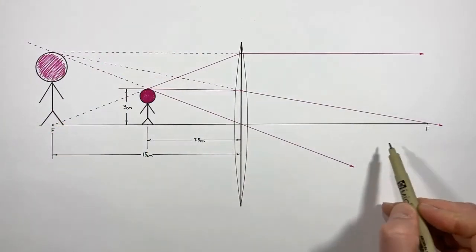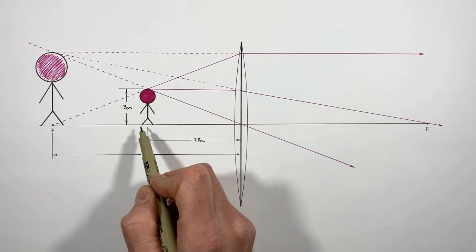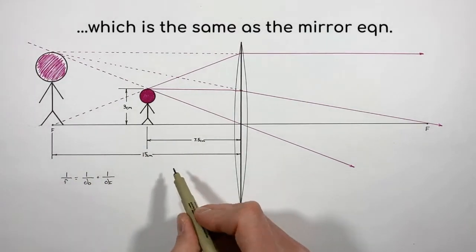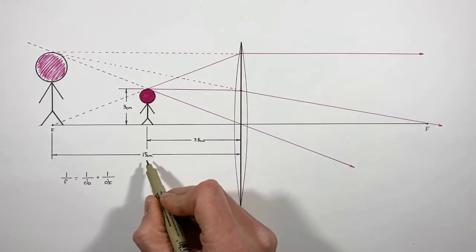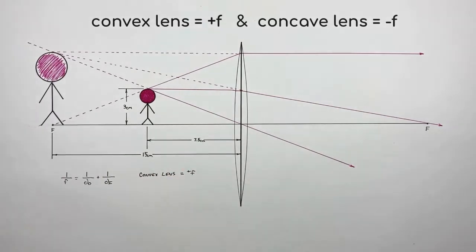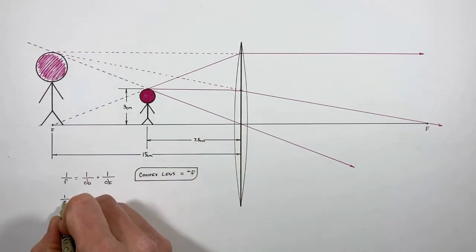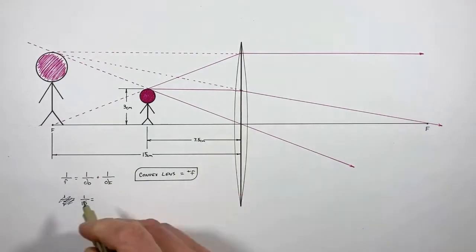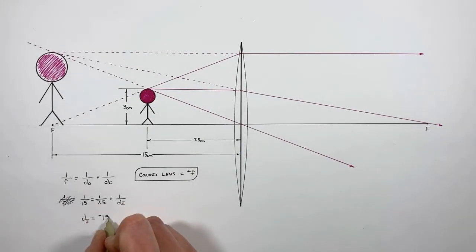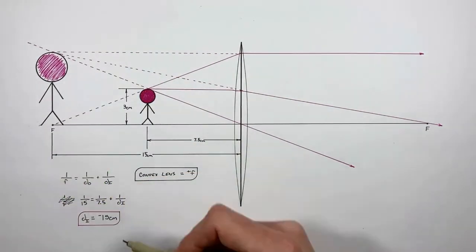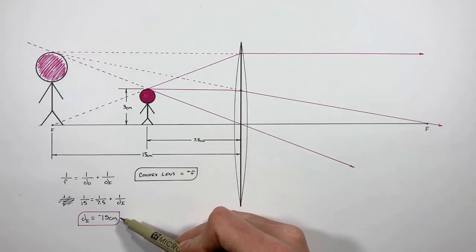Now that we've drawn a complete ray tracing diagram showing both the object and the image, let's confirm this result using the thin lens equation. The focal length is 15 centimeters, and we're dealing with a convex lens, which means the focal length is positive. Plugging in 15 for the focal length and an object distance of 7.5 centimeters, we can solve for the image distance, and we find it is negative 15 centimeters.